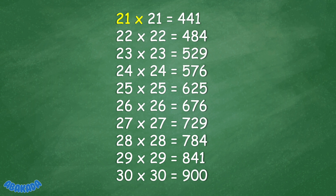21 times 21 equals 441. 22 times 22 equals 484. 23 times 23 equals 529. 24 times 24 equals 576. 25 times 25 equals 625.